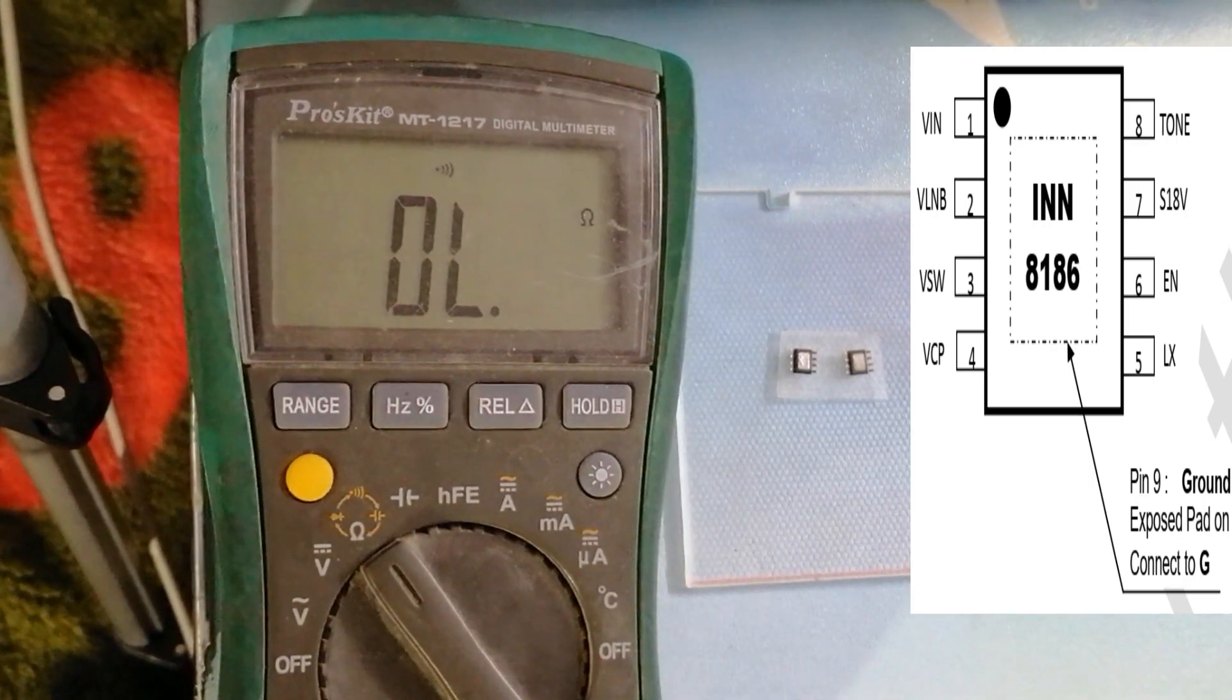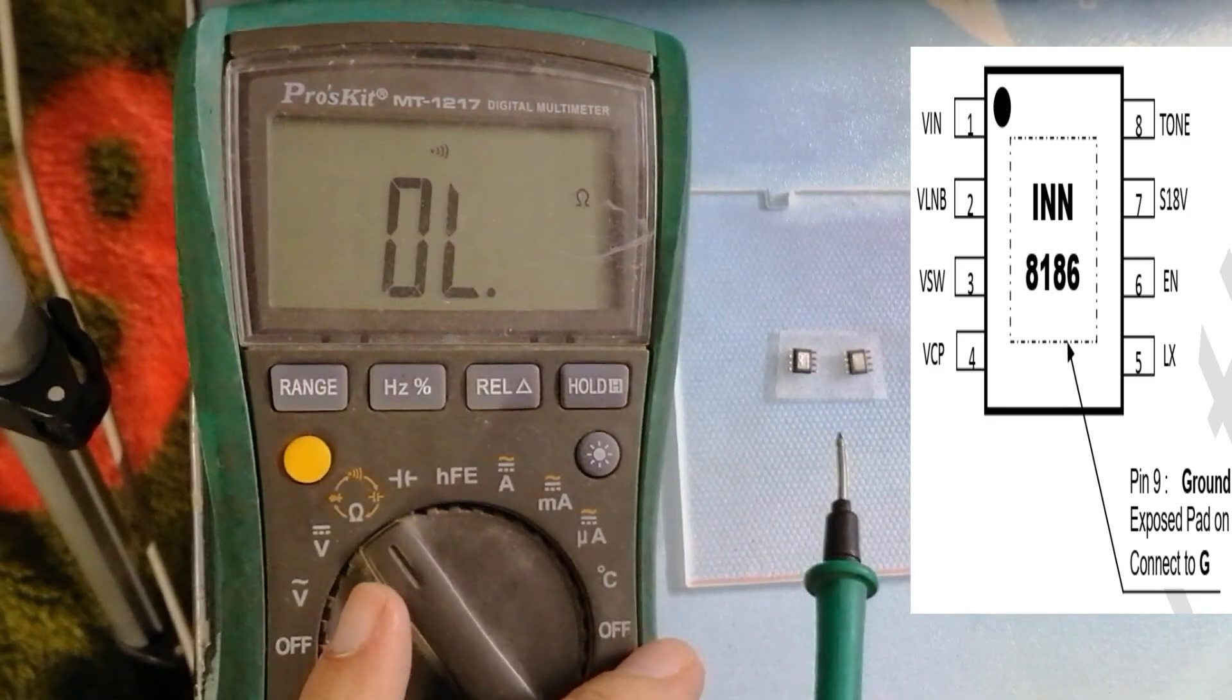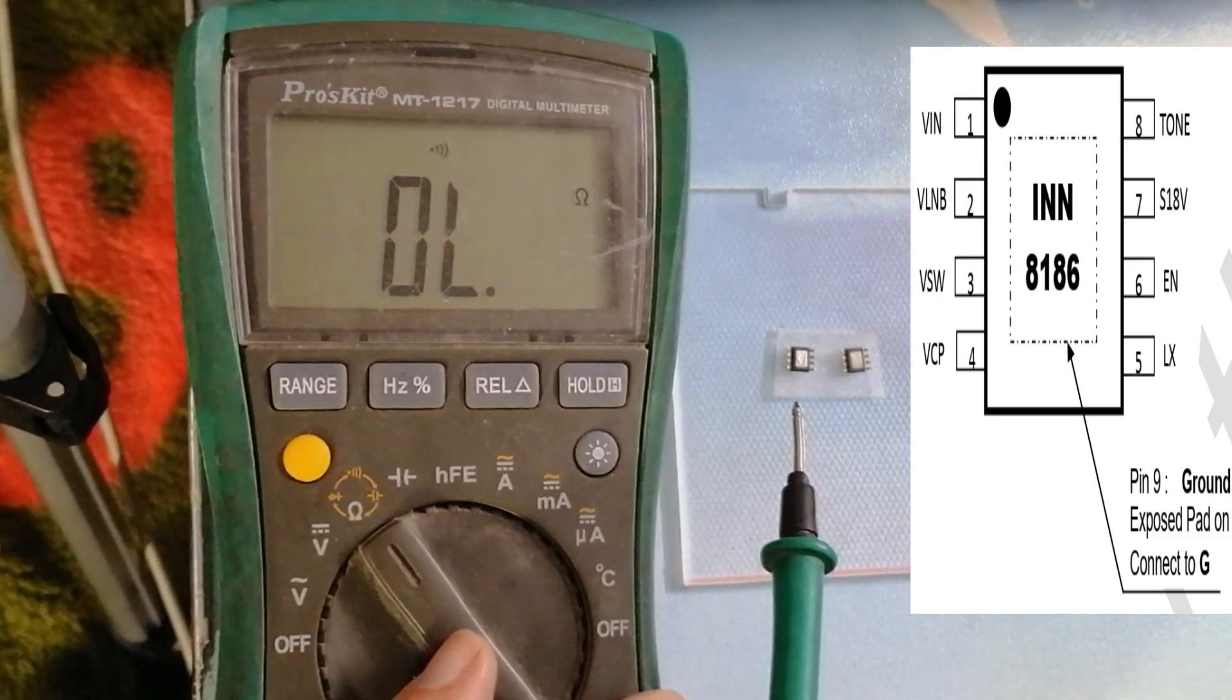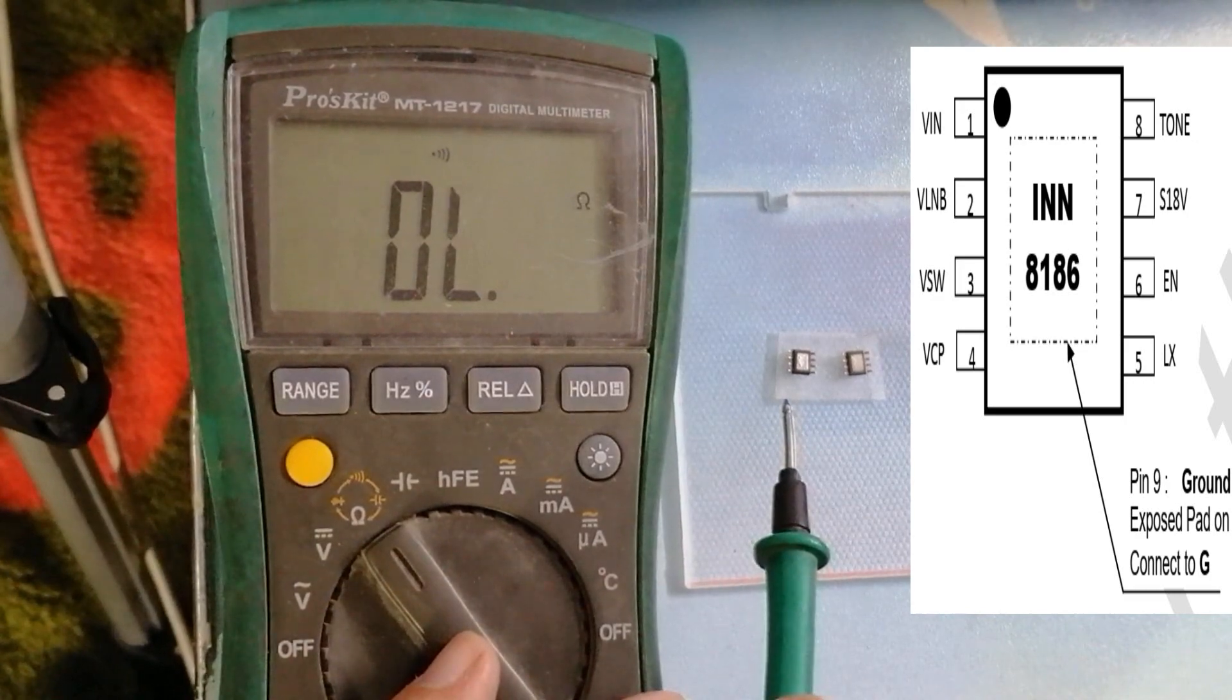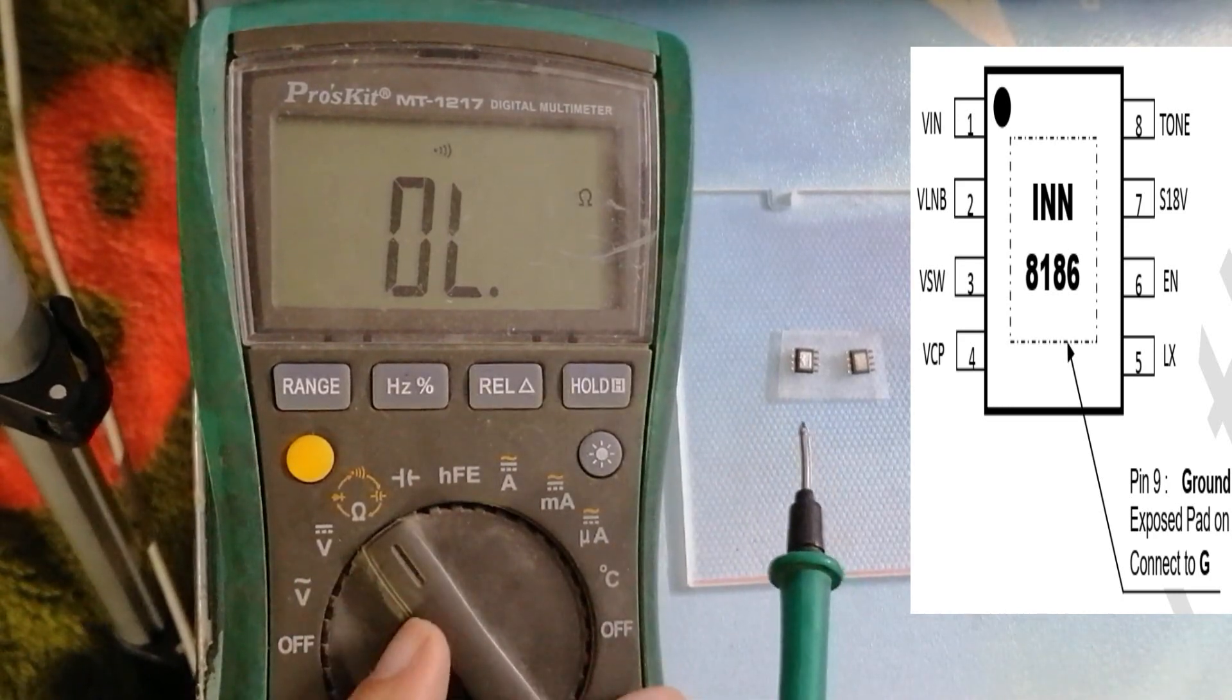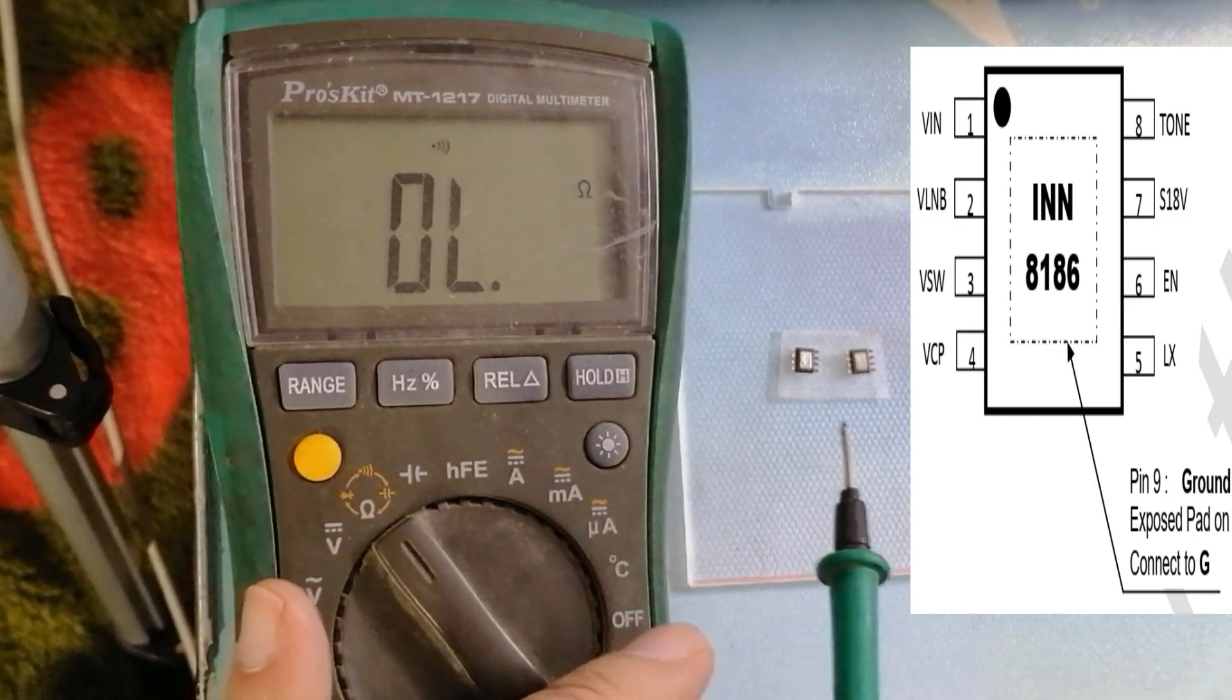Hi, today we'll try to test this IC, IC number S8035BE, which also has an alternative number INN 8186. This IC is used in most satellite receivers, mini satellite receivers.